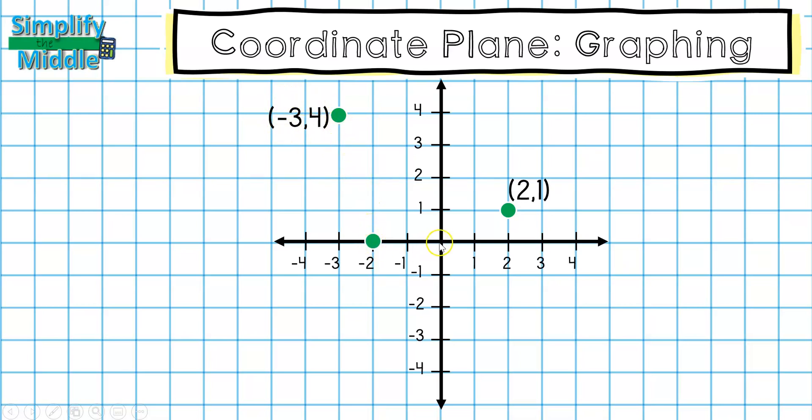Next, I'll look at this point. I'm going to start at my origin, but I noticed something interesting. After I go from my origin to my point negative 2, there's nowhere to go up or down because I'm already at my point. So this must mean that I have a y coordinate of 0. So my ordered pair is negative 2, 0. Anytime I see 0 for my y-coordinate, I know that I must be on the x-axis.